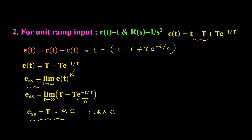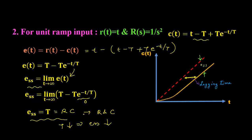From this equation we can say that as the time constant T decreases, the steady-state error e_ss will also decrease. Now let us look at the graphical representation of the time response of the first order control system when subjected to unit ramp input.